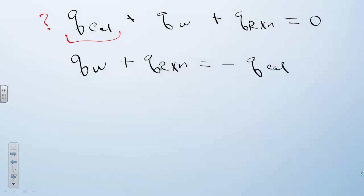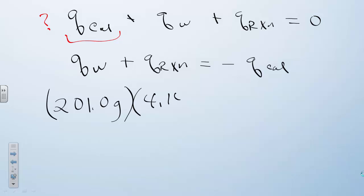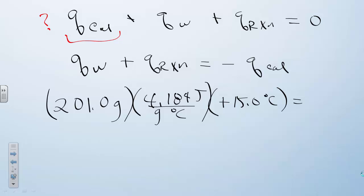For Q_water, we have 201 grams of solution because we added 1 gram of magnesium to 200 grams of acid. We know the specific heat capacity of the solution — assumed to be the same as pure water at 4.184 J/g·°C — and the temperature change was 15.0 degrees. So Q_water is equal to 12,614 joules.